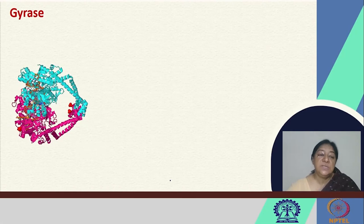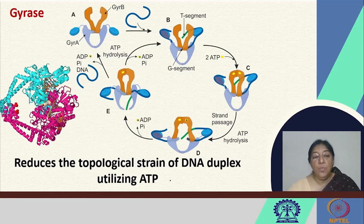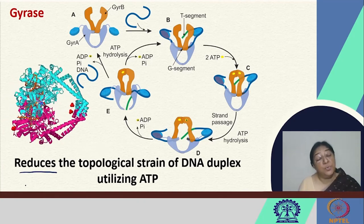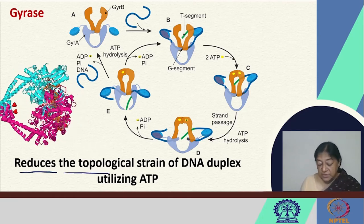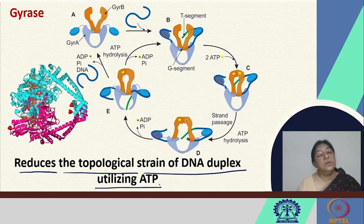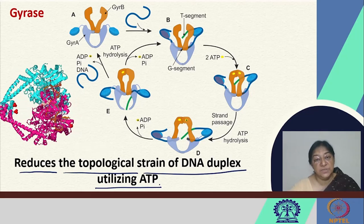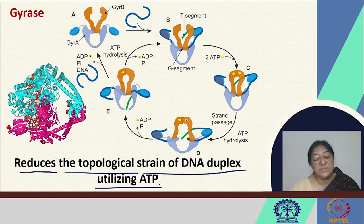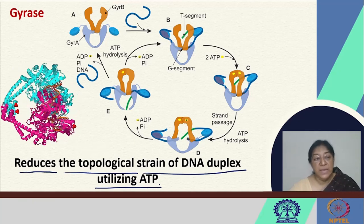Gyrase's main job, like the topoisomerase it belongs to, is to reduce the topological strain of the DNA duplex using hydrolysis of ATP to release the strain due to the unwinding of the double helix — unwinding brought about by helicase.